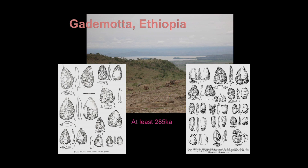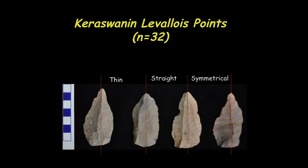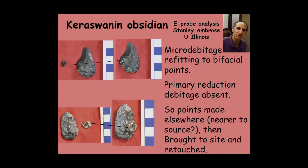Most of this is at least 285,000 years ago. This is Sally's material from the Kapthurin, under a series of tufts dated 235 to 284,000 years ago, with more than 2,000 artifacts in situ under this tuff. Some of the artifacts are points made of obsidian, and there are also Lavallois points shaped on the core — very thin, symmetrical, and straight. The obsidian can be traced to its source, and Stanley Ambrose has been involved in tracing for both Sally's work and our work at Elorga Sali.